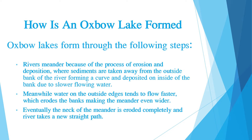Rivers meander because of the process of erosion and deposition, where sediments are taken away from the outside bank of the river, forming a curve, and deposited on the inside of the bank due to slower flowing water. Meanwhile, water on the outside edges tends to flow faster, which erodes the banks, making the meander even wider. Eventually, the neck of the meander is eroded completely and the river takes a new straight path.